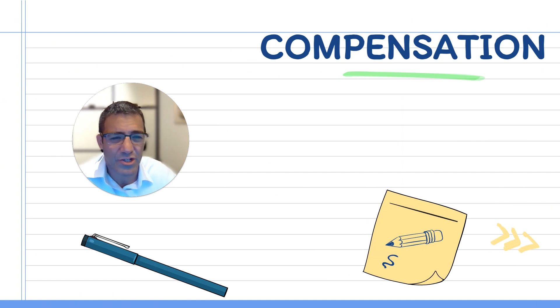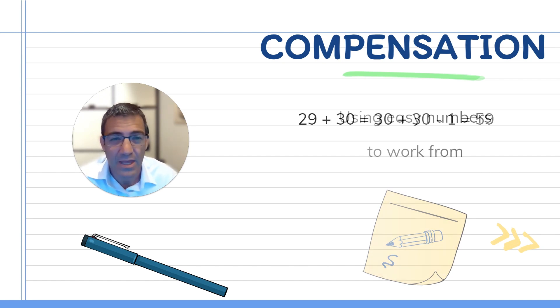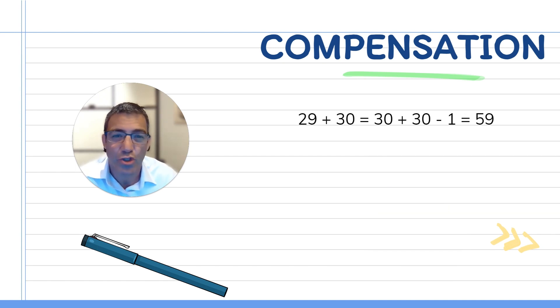So now let's talk about compensation strategy. Compensation means we're going to use easier numbers to work with so that the calculation itself becomes easier. If we look at a first example, 29 plus 30, it might seem obvious to you that 29 is super close to 30. Therefore we could do 30 plus 30, which is 60, and then take away one. But maybe to a first grader, that's not super obvious. So we can explain it to them and teach that technique as a formal technique. 30 plus 30, but we need to take away one because 29 was not quite 30. It was one away from it. This will be equal to 59.